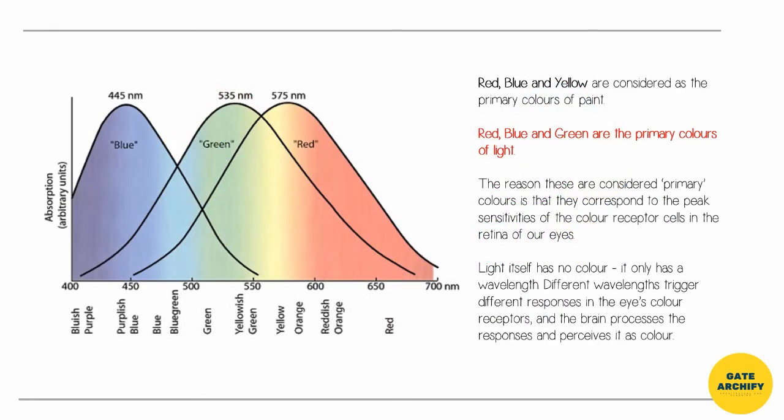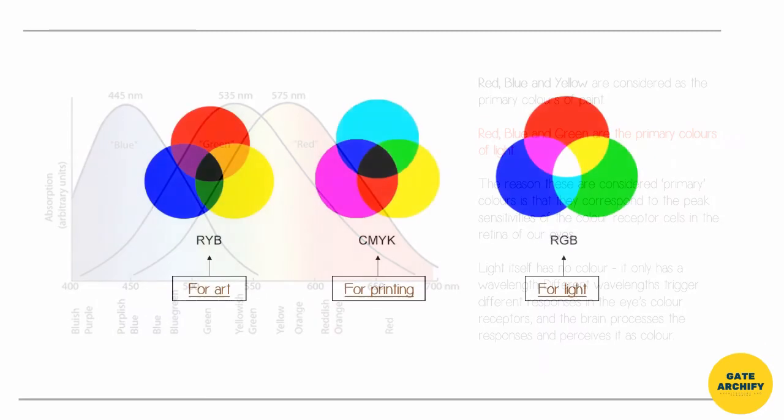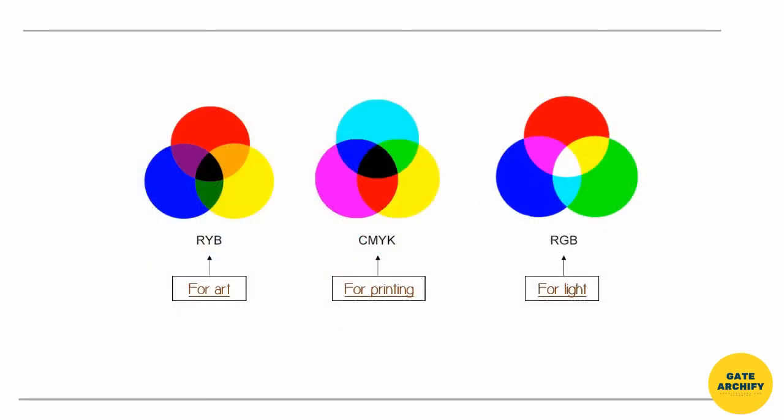Basically, red, blue, and green are natural colors that we can observe in light. But we generally use red, blue, and yellow as primary colors of paint. RYB is for arts, CMYK is for printing, and RGB is for light.